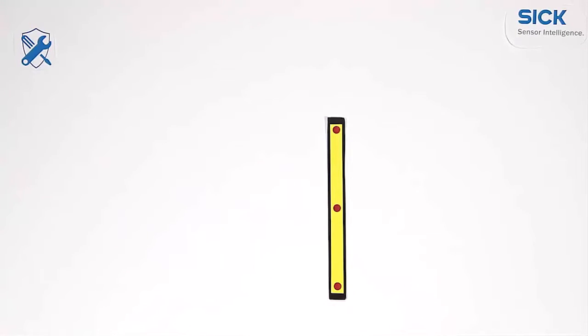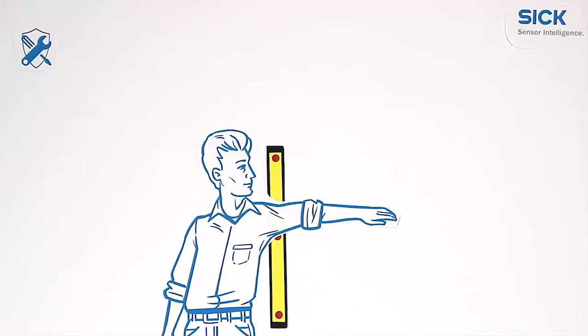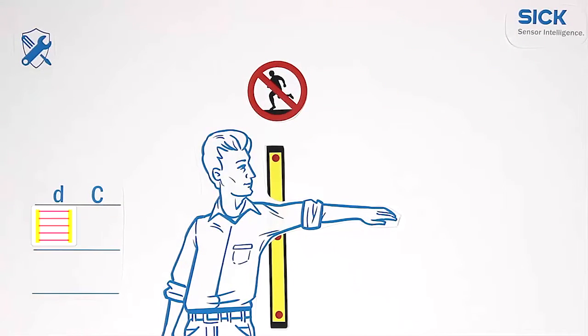Using a multi-beam system, a whole arm can reach through the light beams. Only bodies can be detected. For that reason, C is significantly larger: 850 mm.